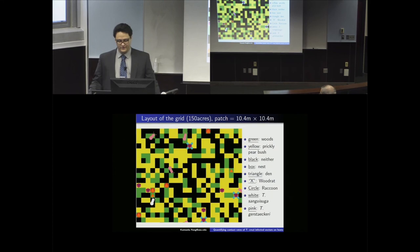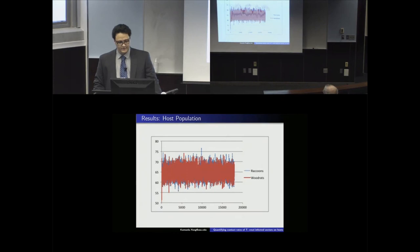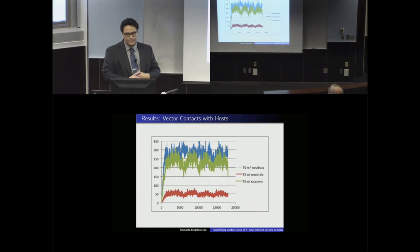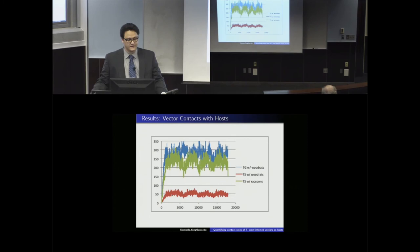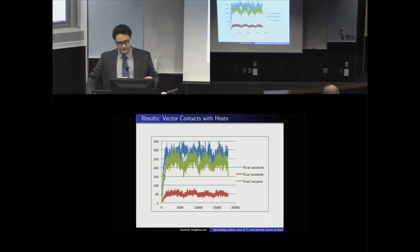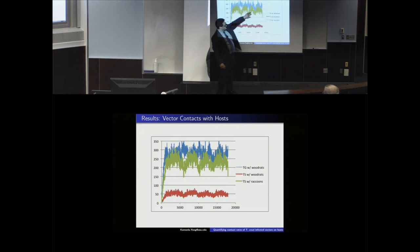The second set of plots shows contacts from the vector's perspective — same axes, time vs. number of contacts per time step. The blue line is T. steckeri contacts with wood rats; green is T. sanguasuga contacts with raccoons; and the other blue is T. sanguasuga contacts with wood rats. T. sanguasuga can eat both wood rats and raccoons, but given the choice it prefers raccoons, so raccoon contacts are much higher than wood rat contacts for T. sanguasuga.